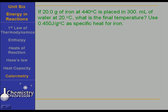Here is a rather straightforward problem. We have 20 grams of iron at 440 degrees Celsius, and we're putting it in 300 milliliters of water at 20 degrees Celsius. We want to know what the final temperature is. The Q for the iron plus the Q for the water must be equal to zero, and MSΔT is Q. So MSΔT for iron must equal MSΔT for water.